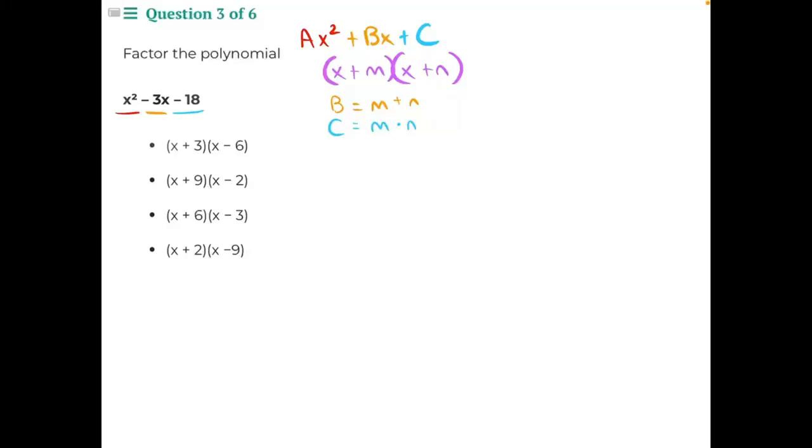Factor the polynomial x² - 3x - 18. In order to factor this polynomial into two sets of binomials, we're going to need to start by looking at our c value, negative 18.